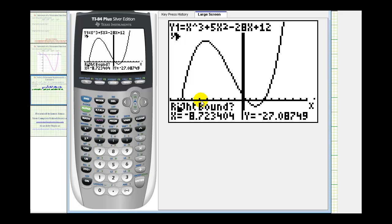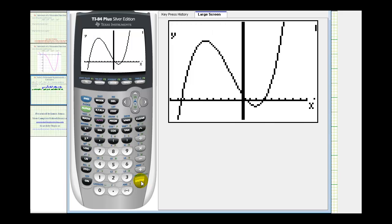Now it asks for the right bound. So I'm going to press the right arrow until I see this cursor above the x-axis right here. Press enter. When it says guess, I'll press enter again. So the first x-intercept or solution is going to be approximately negative 8.47. Let's go ahead and write that down.